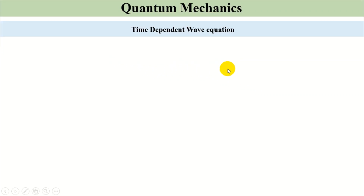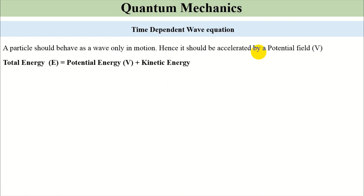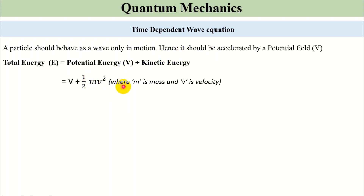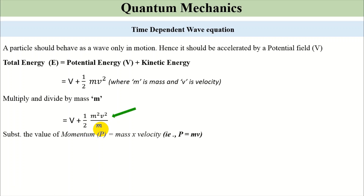For that, we consider a particle which behaves as a wave only in motion, and hence it should be activated by a potential V. The total energy E is given as potential energy V plus kinetic energy, which is V plus half mv², where m is the mass and v is the velocity. Multiplying and dividing by mass m, we get V plus half m²v²/m. Since momentum p = mv, we rewrite: m²v² = p², so total energy E equals V plus p²/2m.